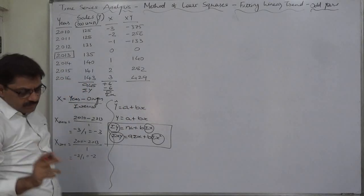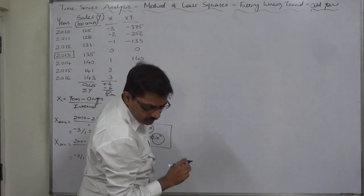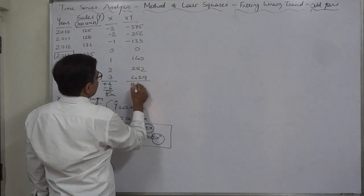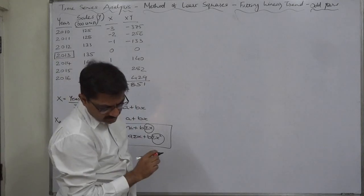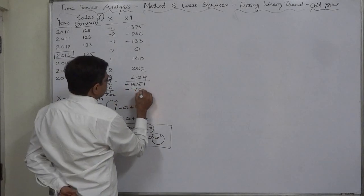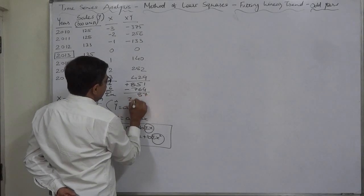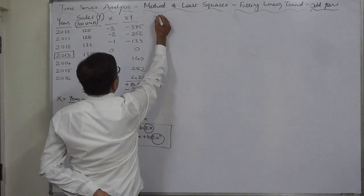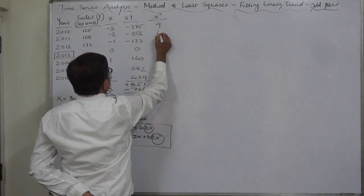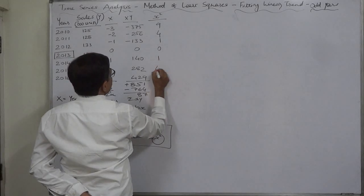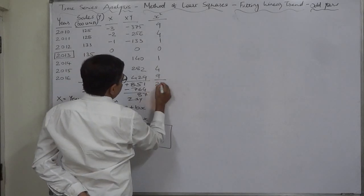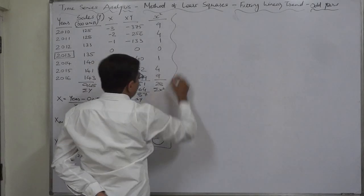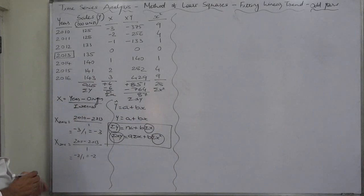The summation of the positive is 851. Positive and negative is 764, so the total comes to 87. Sigma XY. We need one more column, X square. 9, 4, 1, 0, 1, 4, 9. 14 plus 14, 28. Sigma X square. Thus we have all the required columns and their summations.